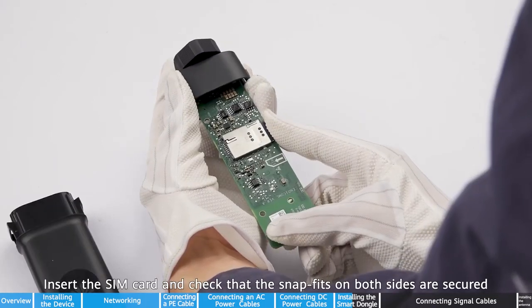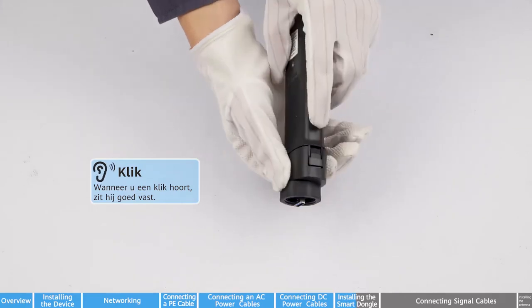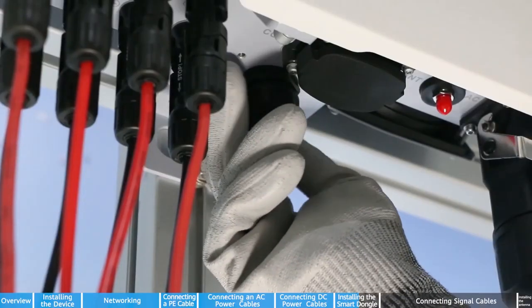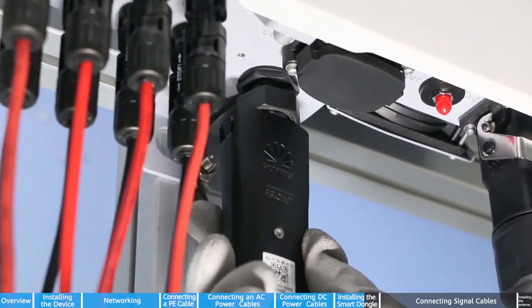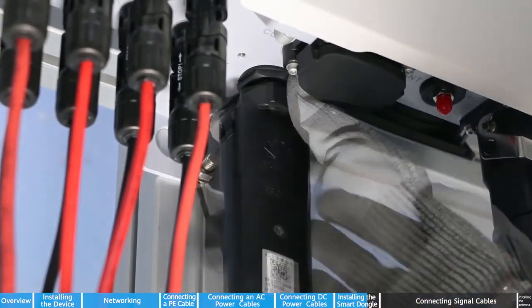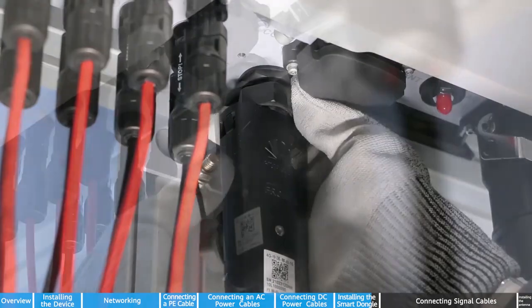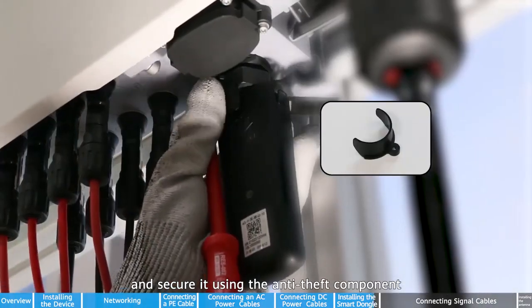Insert the SIM card and check that the snap fits on both sides are secured. Install the smart dongle on the inverter and secure it using the anti-theft component.